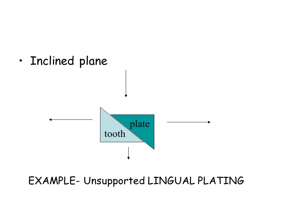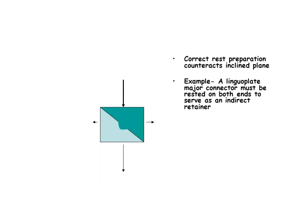Inclined planes are simple machines that are used to push heavy objects up a slope. Opposing inclined planes appear in many RPD designs and can cause unwanted tooth movement. The forces of the inclined plane may be redirected more effectively down the long axis of the tooth by incorporating a stop, or rest, to limit the movement of the two planes.